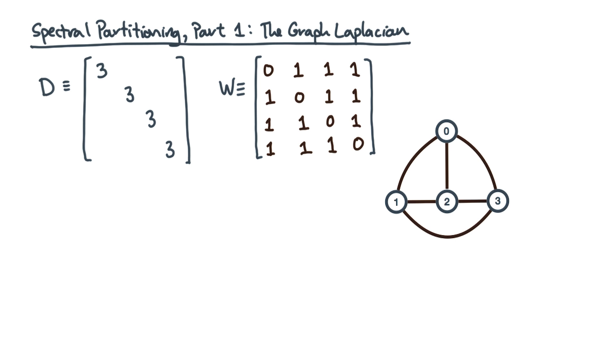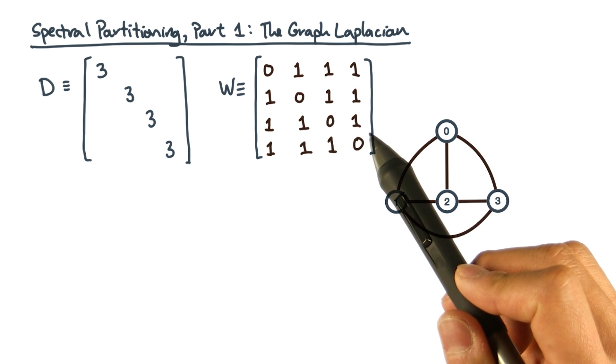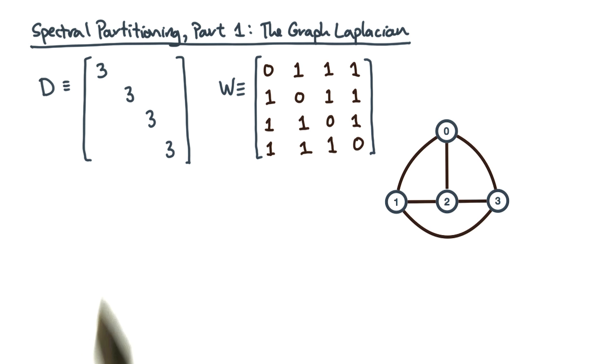Again, this example isn't very exciting because it's basically fully connected, so there are ones in all of the off diagonal entries. Finally, the graph Laplacian is just D minus W. In this case, that's this thing.